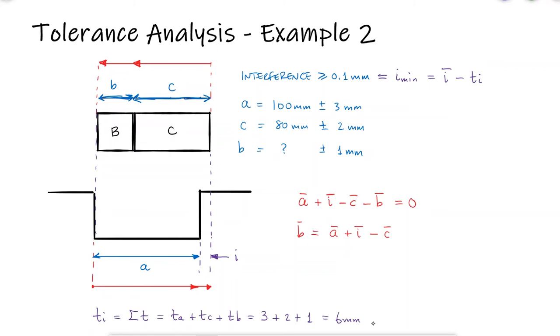For the given minimum interference value of 0.1 millimeters, we find that the nominal value for the interference should be 7 millimeters. Substituting this value, we find that the nominal dimension B is 27 millimeters.